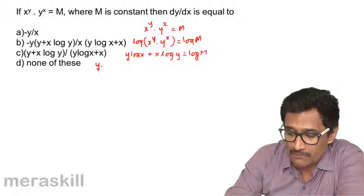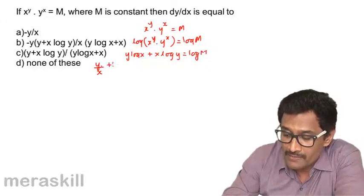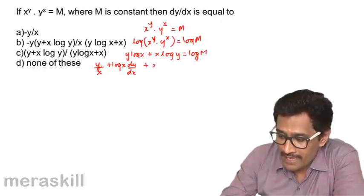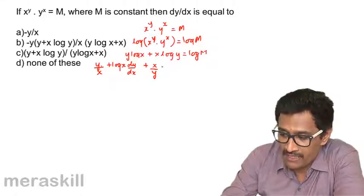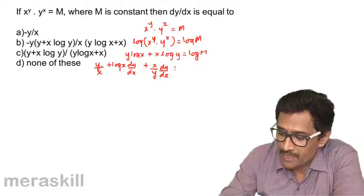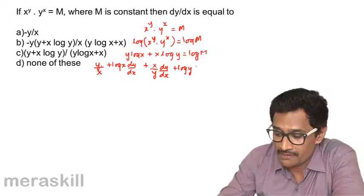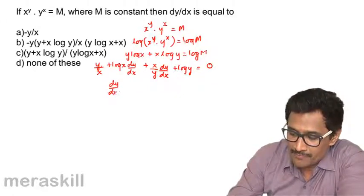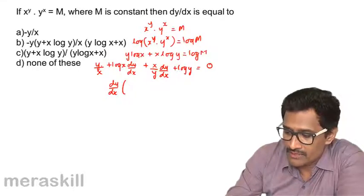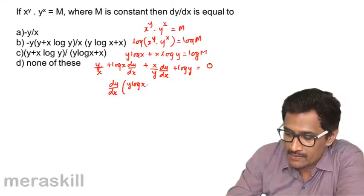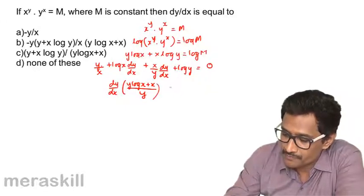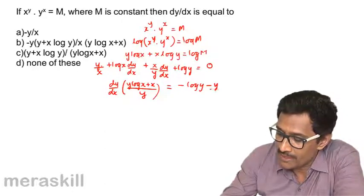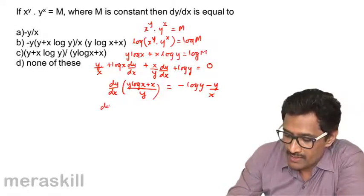Differentiating both sides with respect to x using the product rule: y times (1/x) plus log x times (dy/dx) plus x times (1/y)(dy/dx) plus log y times 1 equals 0. Collecting dy/dx terms: dy/dx times (log x + x/y) equals −log y − y/x.